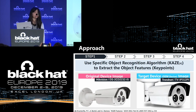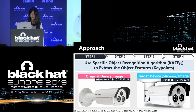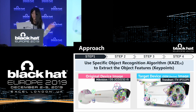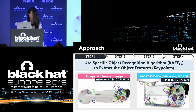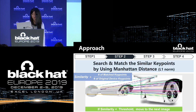So next I would like to show the actual approach. There are four steps. First, I use a specific object recognition algorithm called KAZE to extract object features — in other words, the key points that represent the features of the image. As shown in the slide, these are the actual key points extracted from the original and target device. Each key point contains a feature vector of gradient information represented with 64 dimensions. After extracting the key points, I search and match similar key points between the original and target device using Manhattan distance, then calculate the similarity of the device image based on the matched key points.